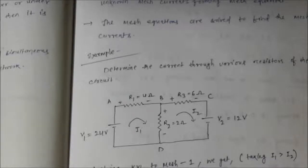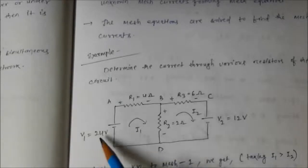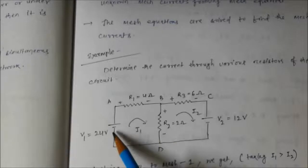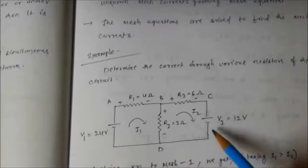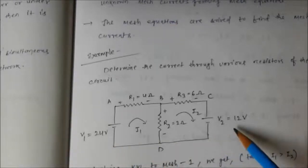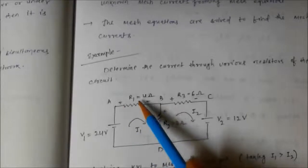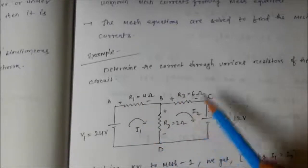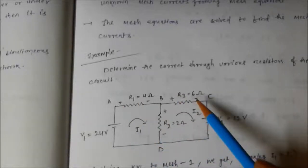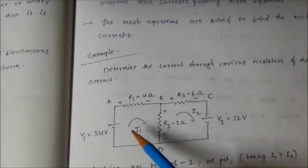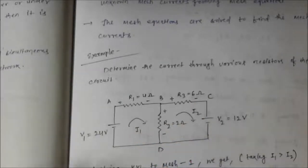For easier analysis, I have taken two meshes with mesh currents i1 and i2 flowing in the clockwise direction. We have a 24-volt voltage source in the left mesh and a 12-volt voltage source in the right mesh. The resistances are 4 ohms, 2 ohms, and 6 ohms.